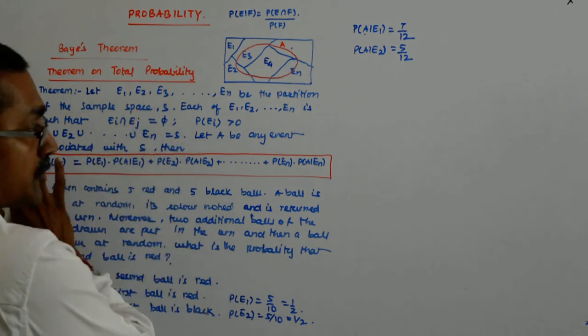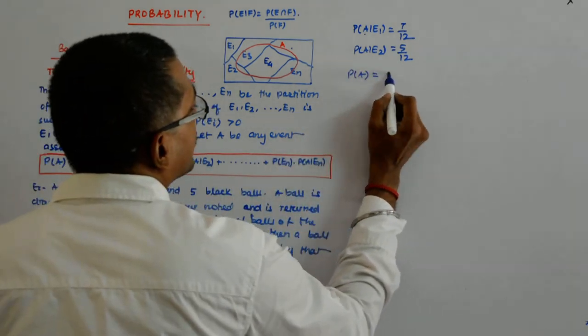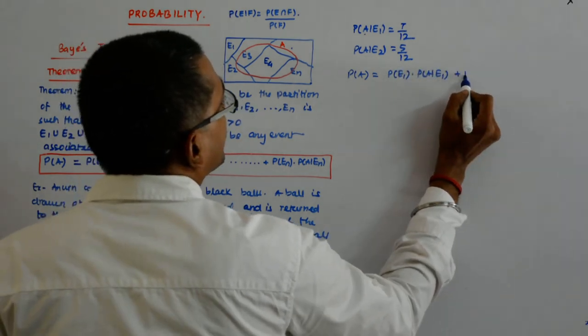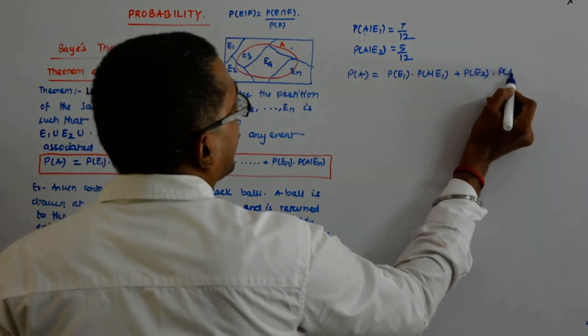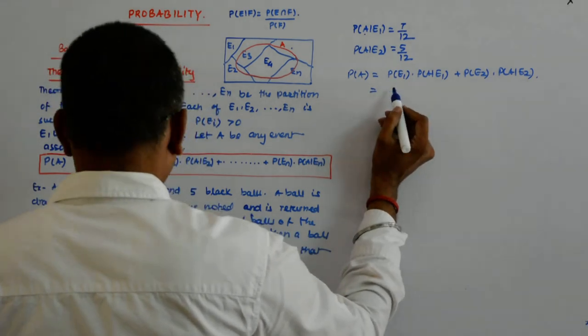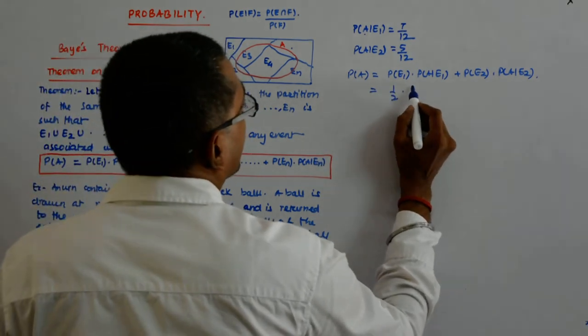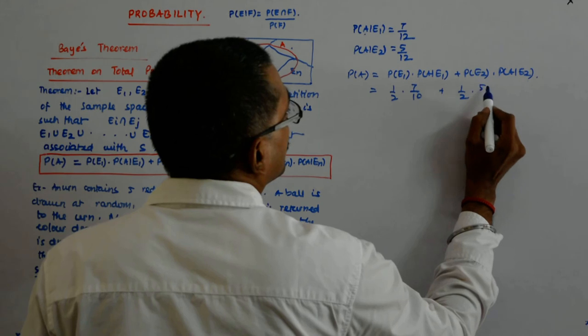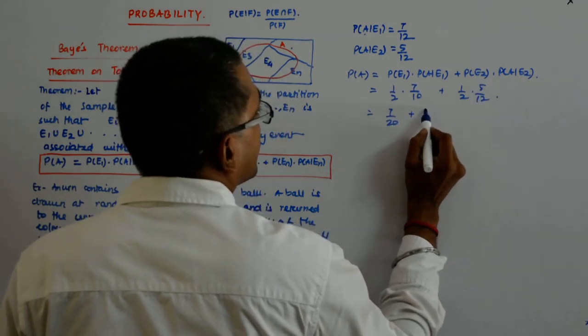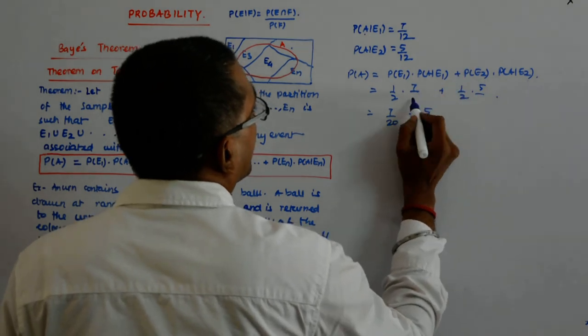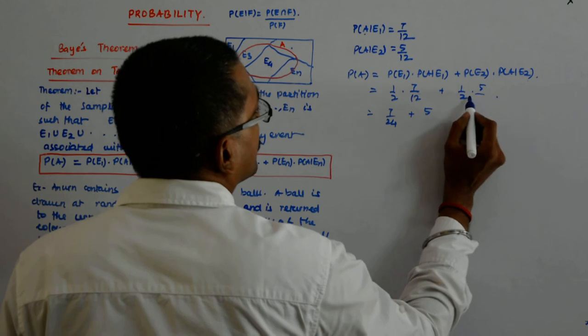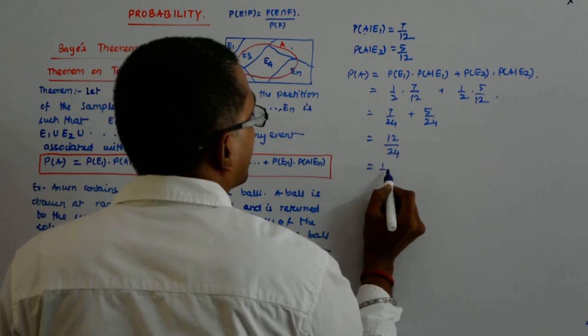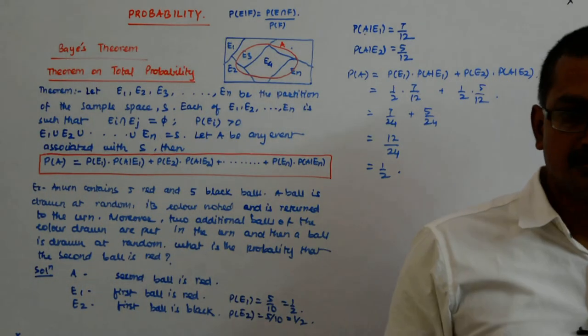Now, you straight away plug it in into this. So my P(A) becomes P(E1) into P(A such that E1) plus P(E2) into P(A such that E2). So that becomes half into 7 by 12 plus half into 5 by 12. So that gives me 7 by 24 plus 5 by 24. That is 12 upon 24. That is half.